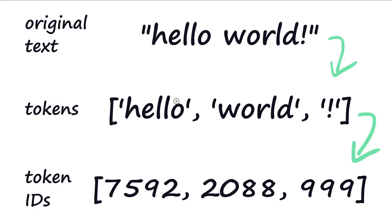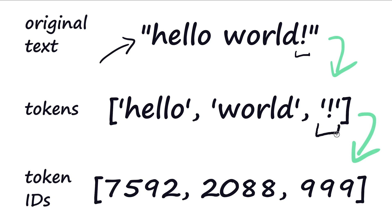Tokenization in short is the process of going from our original human-readable text — so 'hello world' with an exclamation mark at the end — and converting that original text into what we call tokens. Now tokens can be a few different things. In this case what we see is tokens built from words, so each token represents a word or a part of the syntax, like the exclamation mark at the end.